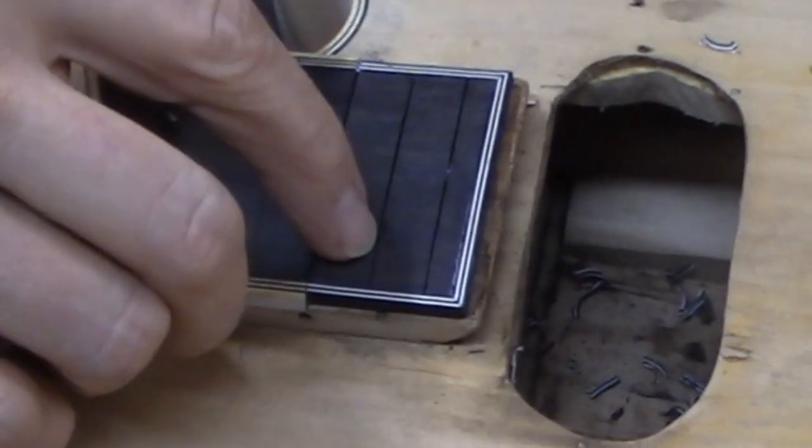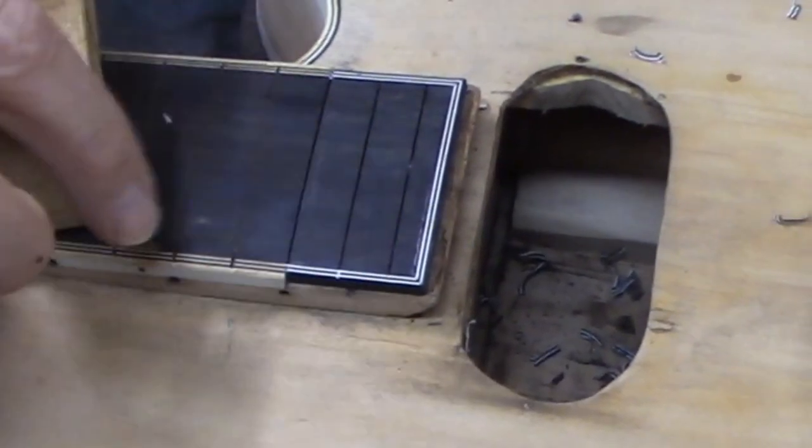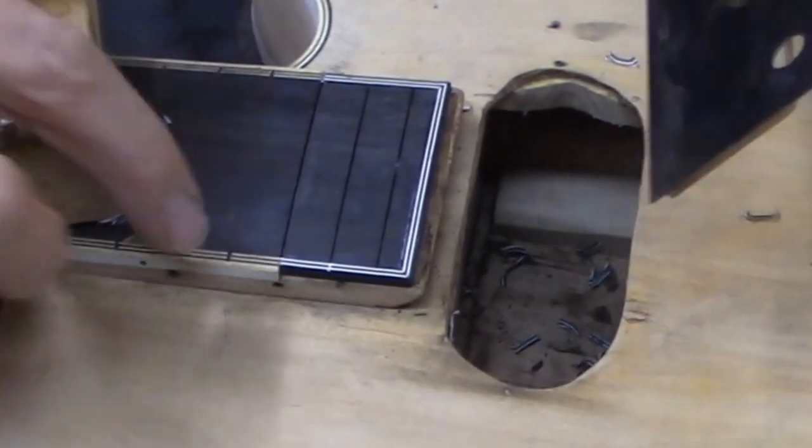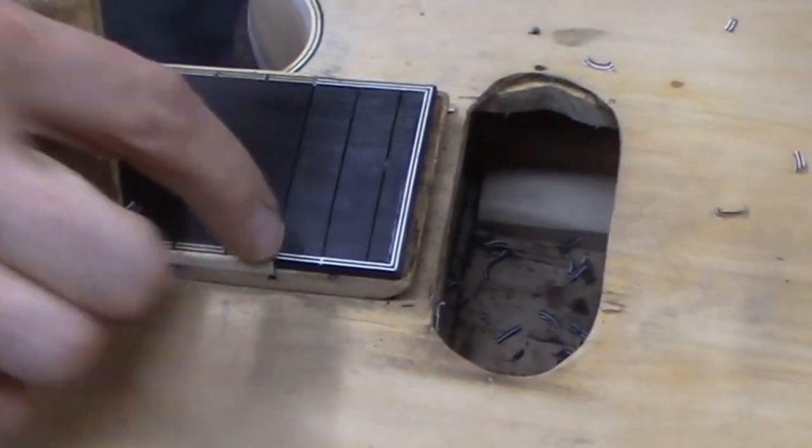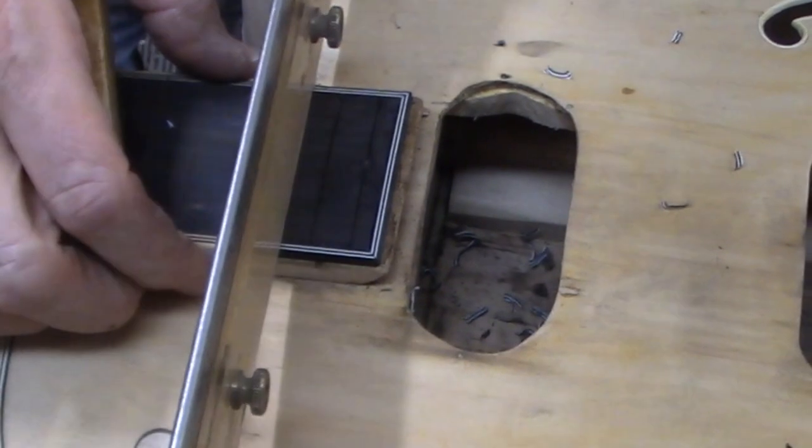Before the outer binding goes on we need to extend the fret slots into these purfling lines just like you can see it is everywhere else, so take care of that first.